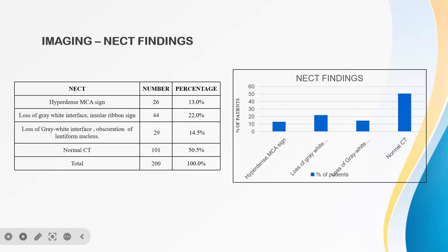Non-enhanced CT findings: 26 cases showed hyperdense MCA signs; 44 cases showed loss of grey-white differentiation and insular ribbon signs; 29 cases showed loss of grey-white differentiation and obscuration of the lentiform nucleus; and 101 cases had a normal CT.